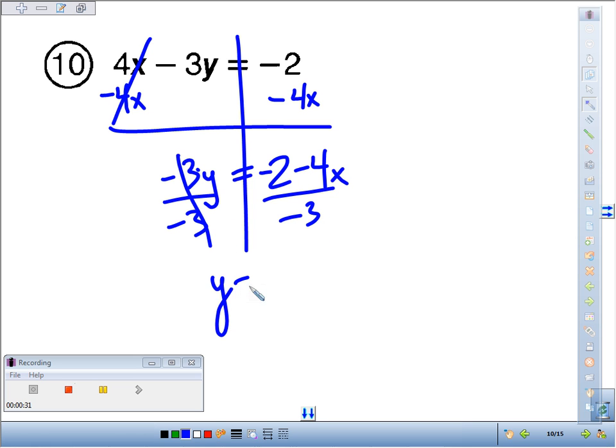And we end up getting y equals, negative 2 divided by negative 3. A negative divided by a negative is a positive, 2 thirds.